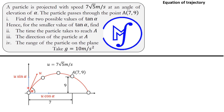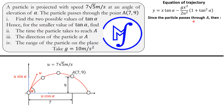Every particle in projectile motion follows a trajectory where the vertical and horizontal distances are related by the equation: y = x·tan α − (g·x²)/(2u²) · (1 + tan²α), where g is the acceleration due to gravity and u is the initial speed. Since the particle passes through point A with coordinates (7, 9), the vertical distance is 9 and the horizontal distance is 7.